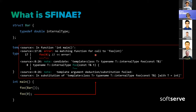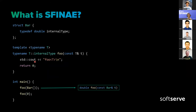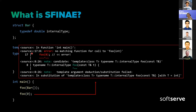The error says "no matching function for call to foo with int parameter." You can see that the compiler saw the template foo as a candidate, but template argument deduction/substitution failed. That substitution failure is shown just as a note — it's not an error. The problem is that int doesn't have an internal_type member, so the compiler doesn't see this candidate as viable, and there's no other candidate for foo with int.